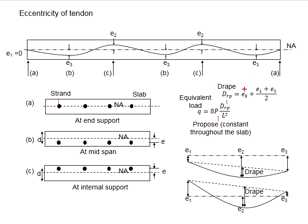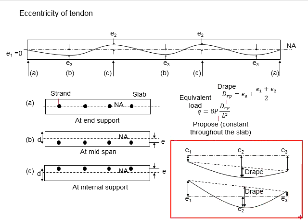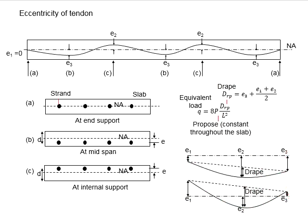And there will be a term known as the drape. It refers to the effective eccentricity as reference to the positions of the tendons at the start and the end of the segment. This drape can be calculated from this equation here, or it can be solved graphically based on the figures here.